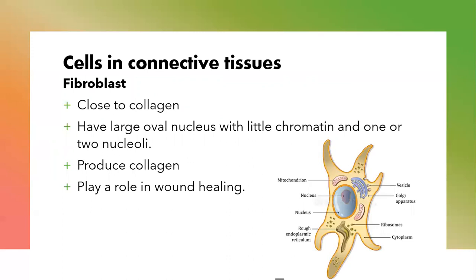The fibroblasts are usually close to collagen because they produce the collagen. They have a large oval nucleus with little chromatin and one or two nucleoli. They play a role in wound healing because they produce collagen. This is a diagram of how the fibroblast looks. When they are in the active stage, you can see cytoplasmic processes on the surface. It is a typical cell having a nucleus, endoplasmic reticulum, ribosomes, Golgi apparatus, mitochondria, and so on.